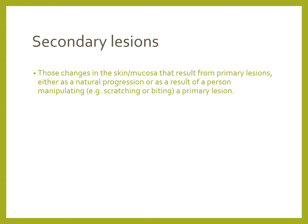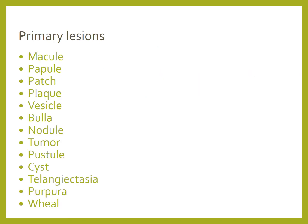Secondary lesions are skin or mucosal changes that result from primary lesions, either as a natural progression of the lesion or as a result of a person's manipulation. For example, if you scratch acne it can turn into a pustule or an ulcer. That is the difference between a primary and a secondary lesion.